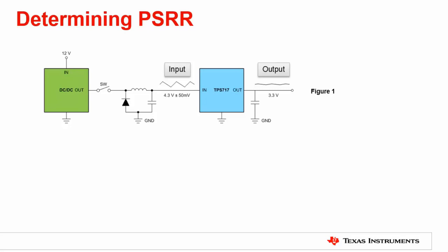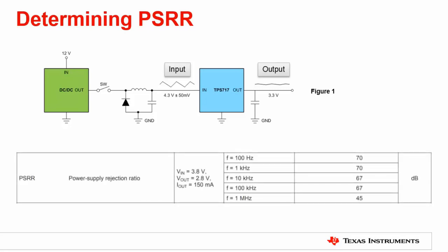The PSRR of the LDO will determine the amount of ripple remaining at the output of the TPS717. In order to determine the degree of attenuation, you first need to know at which frequency the ripple is occurring. For this example, let's assume 1 megahertz. It is common to find the PSRR value specified on the data sheet under the electrical characteristics table. As you can see, the value for the PSRR at 1 megahertz is 45 decibels.